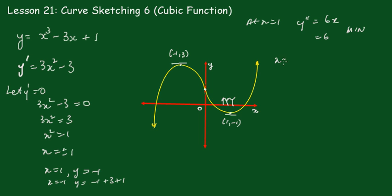And at x equals negative 1, y double dash equals negative 6, so it'll be concave down, so that's a maximum.